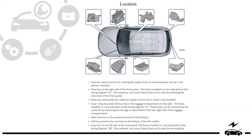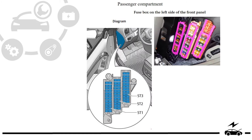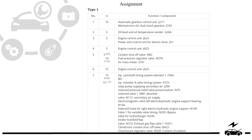Fuse box location. Passenger compartment fuse box — location photo, diagram Type 1, designation.